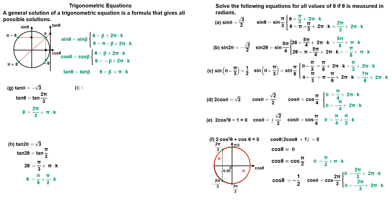Solving this equation, we get tangent of theta minus 3 pi divided by 4 is equal to 1. The reference angle is 45 degrees, or pi divided by 4 radians. Tangent is positive in quadrant 1 and quadrant 3. We can write tangent of theta minus 3 pi divided by 4 is equal to tangent of pi divided by 4. The general solution is given as follows.